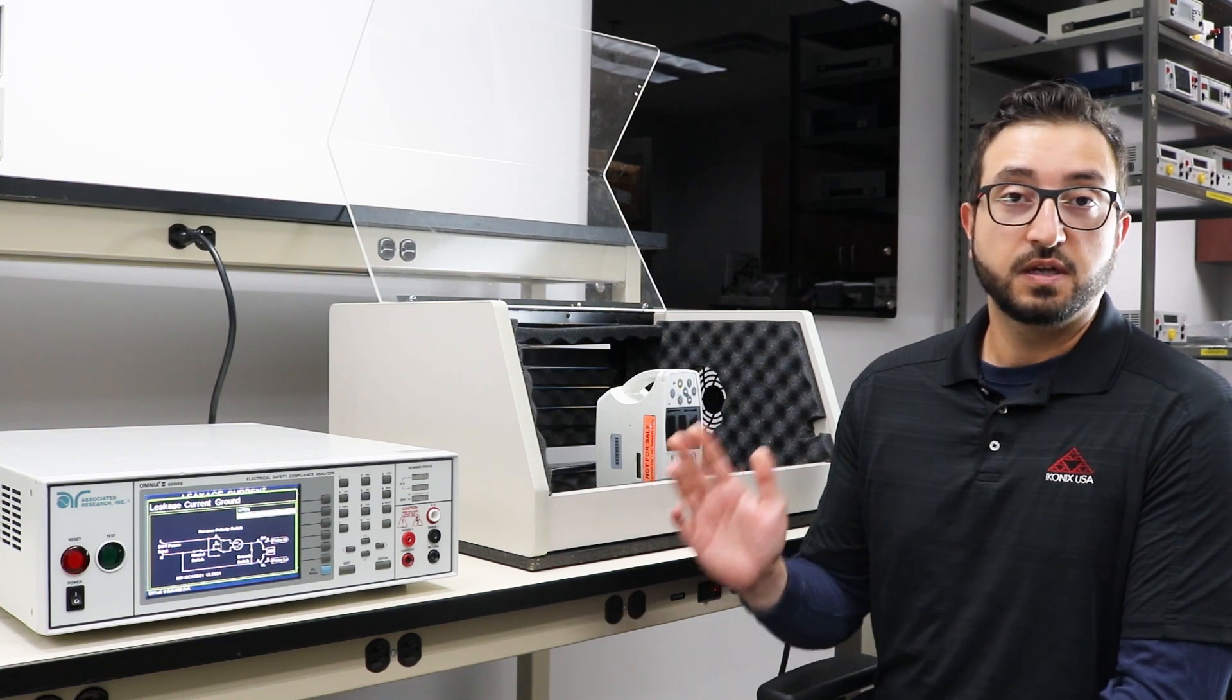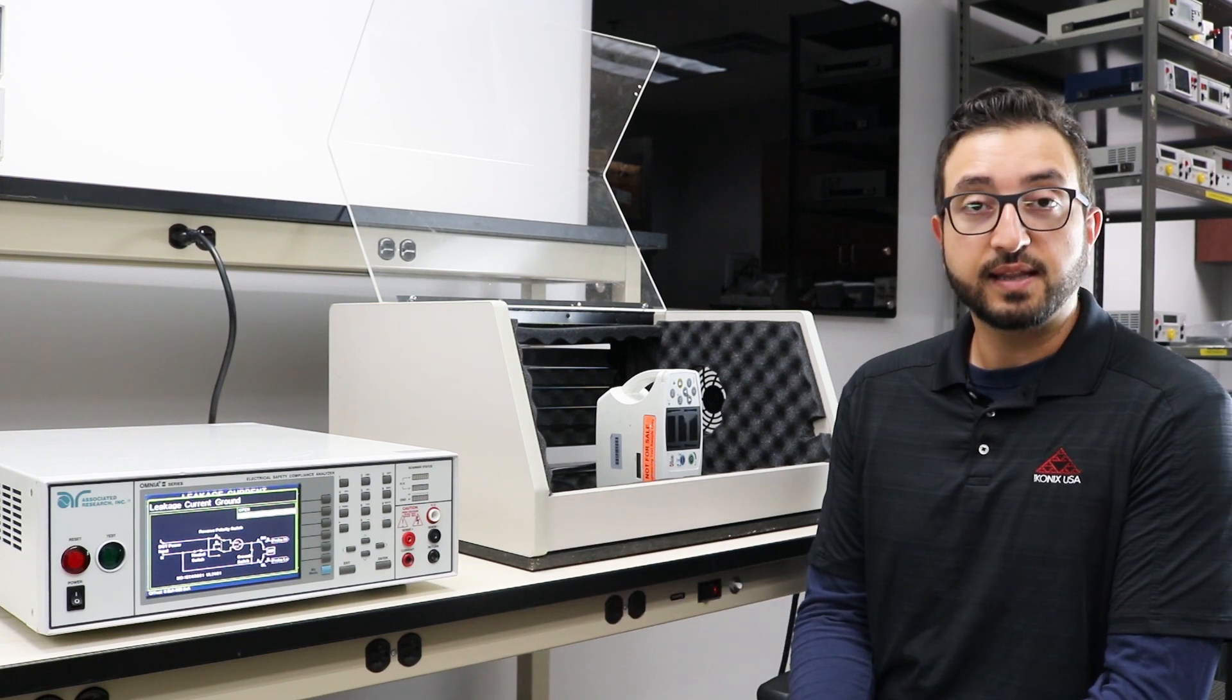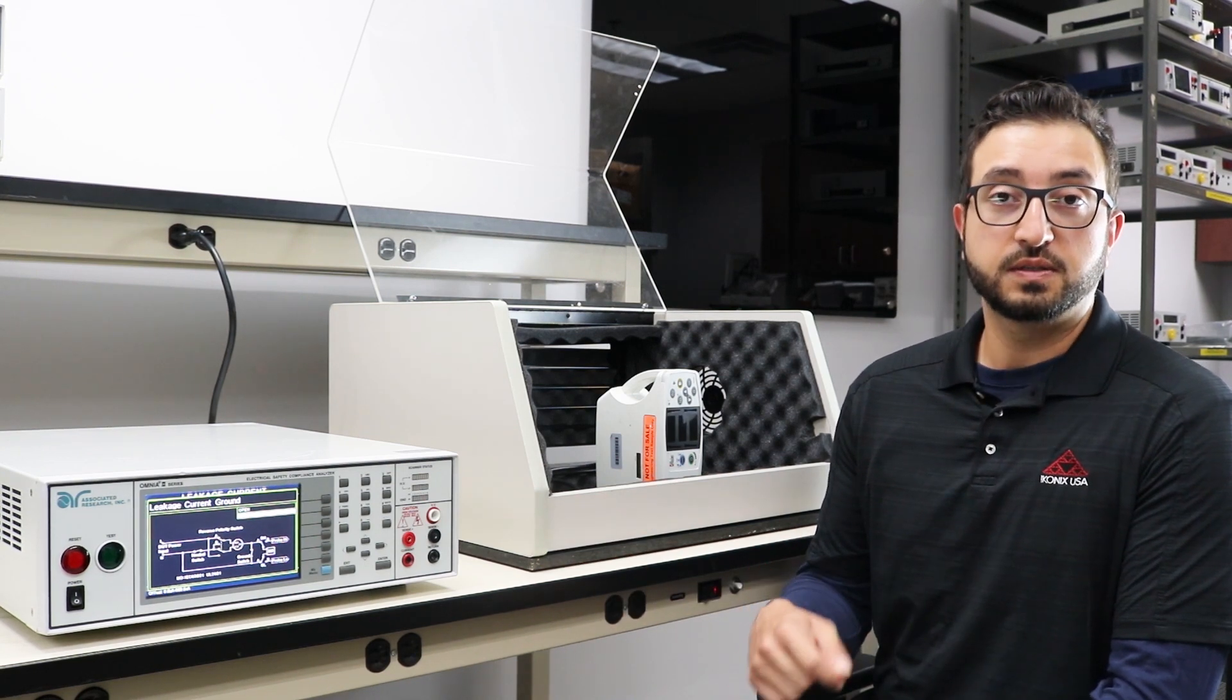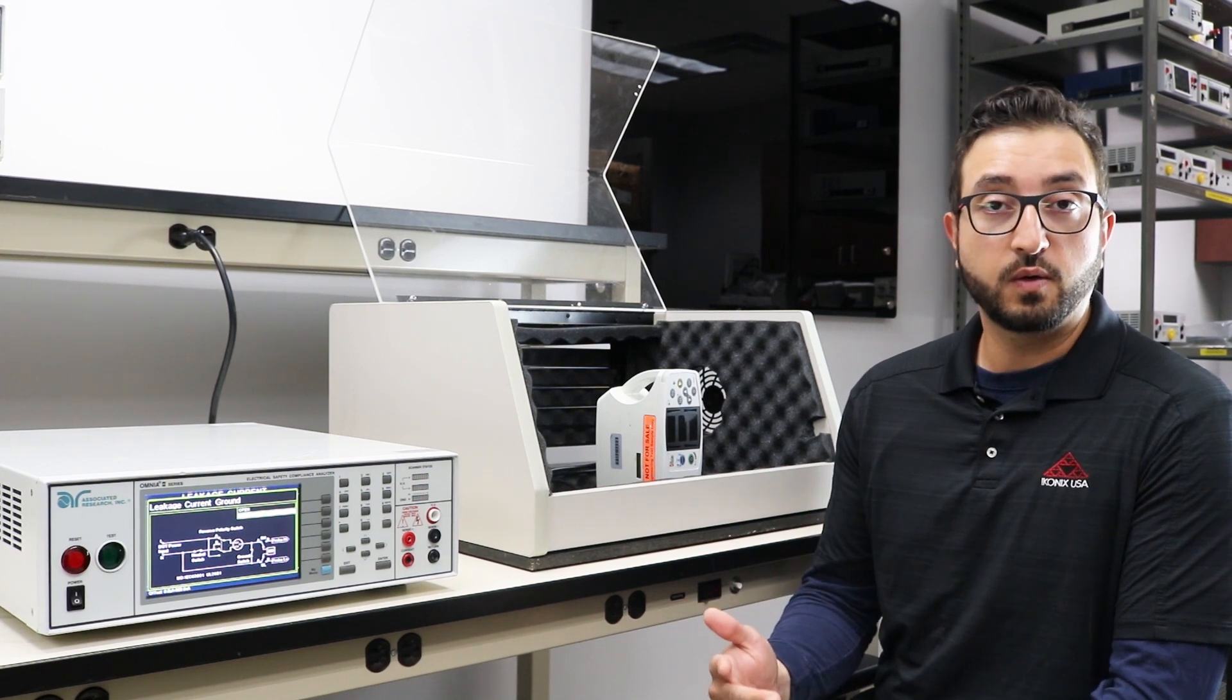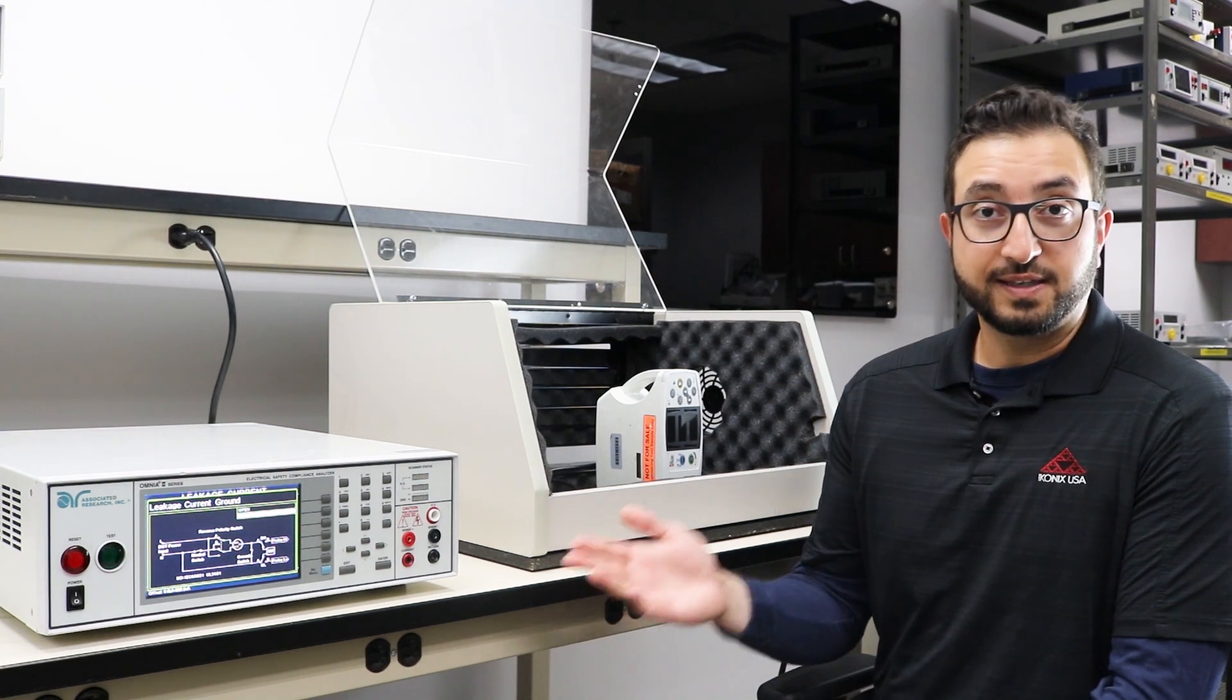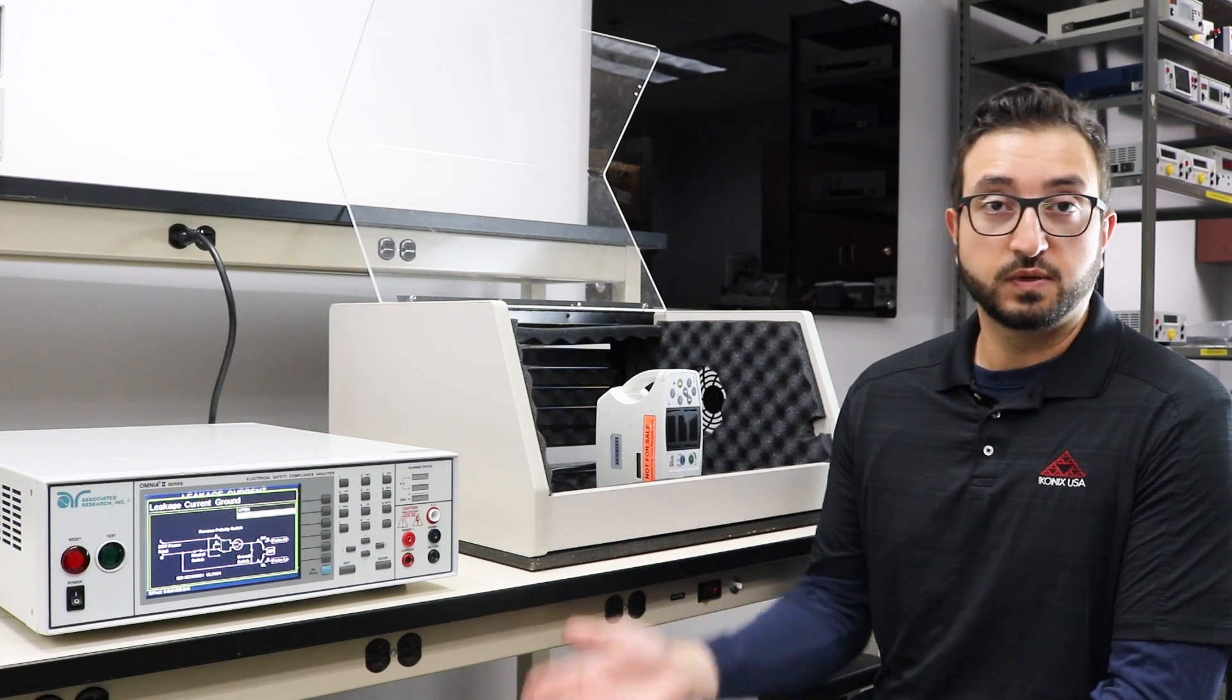What I have here is three different earth leakage tests programmed into our electrical safety test analyzer: the first one being under normal conditions, the second one with an open ground, and the third one with an open ground and an open neutral fault condition. Let's take a look at the test parameters in detail before we make the connections and execute the test.